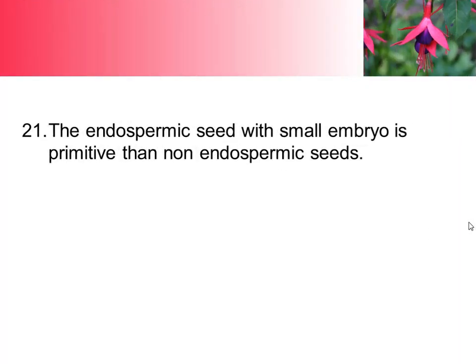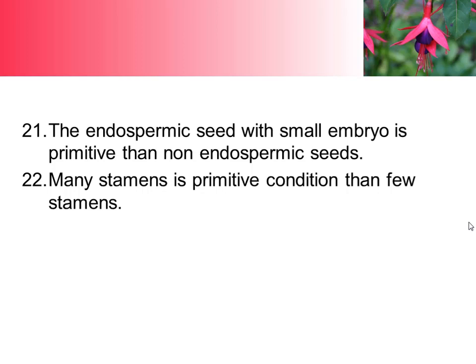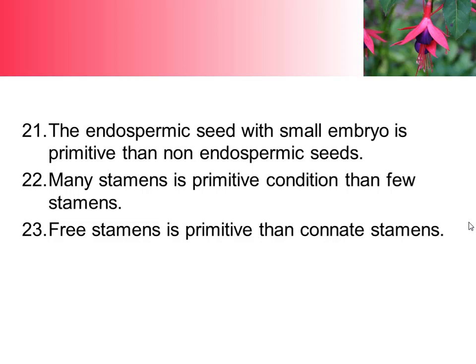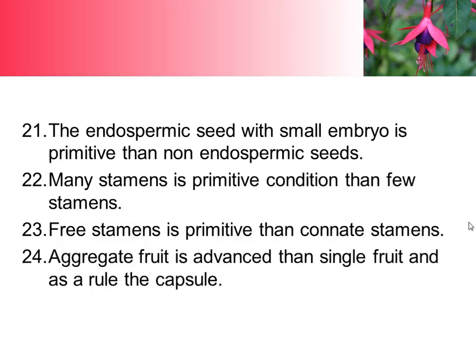The endospermic seed with small embryo is more primitive than non-endospermic seeds. Many stamens is a primitive condition compared to few stamens. Free stamens are more primitive than connate stamens. Aggregate fruit is an advanced characteristic compared to solitary or single fruit, and as a rule the capsule is also considered.